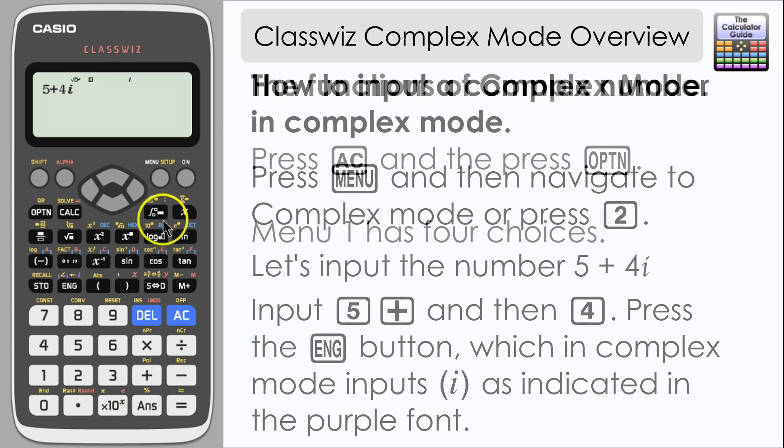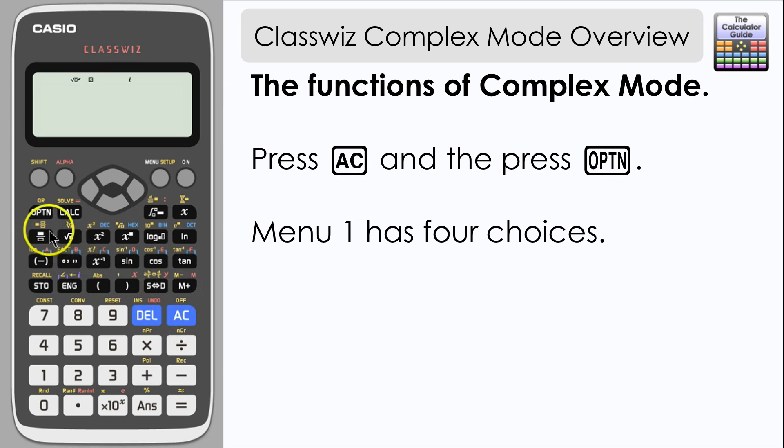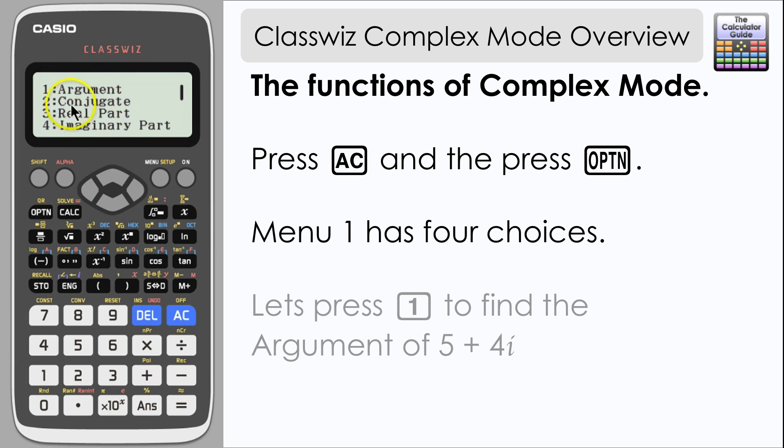We're going to have a look at the four functions that are available in menu 1 from the options in complex mode. If you press AC and then press OPTN we have four choices here to find the argument, the conjugate, or to isolate the real part or the imaginary part of a complex number.